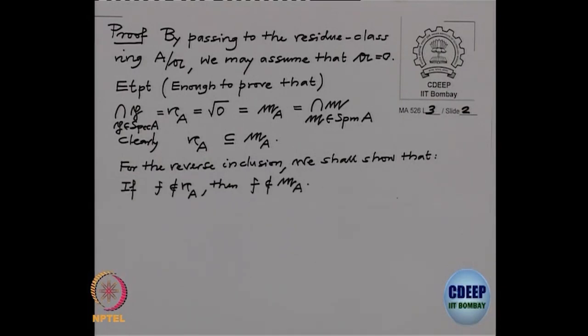Suppose F is not nilpotent. Then I want to show that F is not in the Jacobson radical, meaning there is a maximal ideal in the ring such that F is not in that maximal ideal. Now, F is not nilpotent is equivalent to saying that the localization at F is a non-zero ring, where localization at F means S-inverse A, and S is the multiplicative submonoid generated by F.